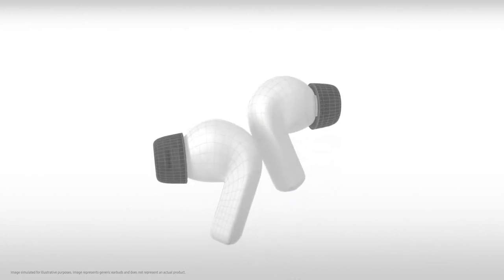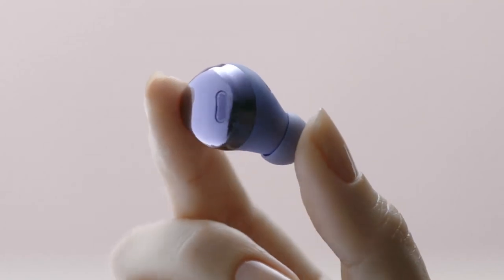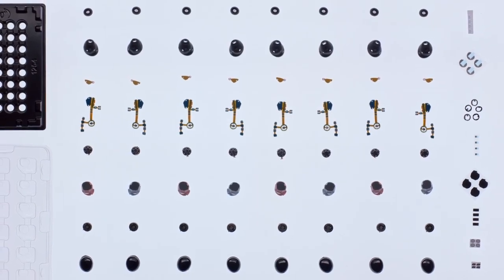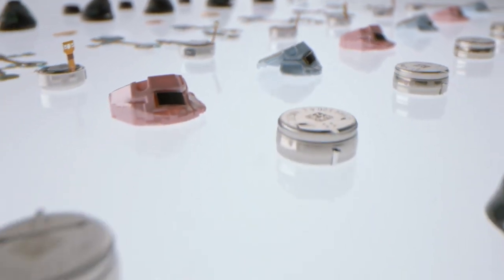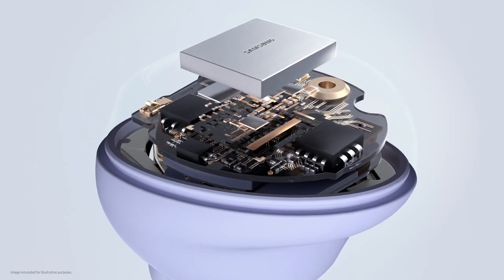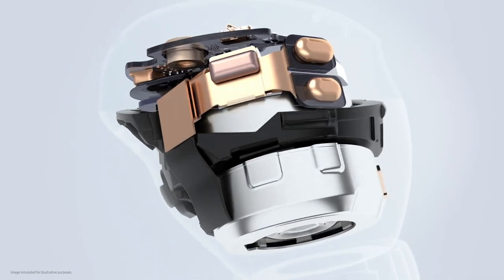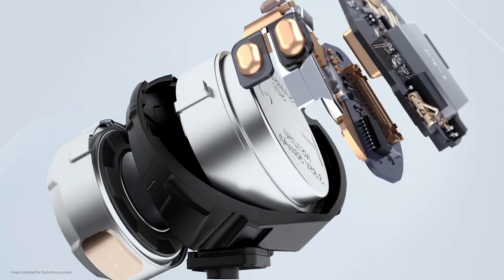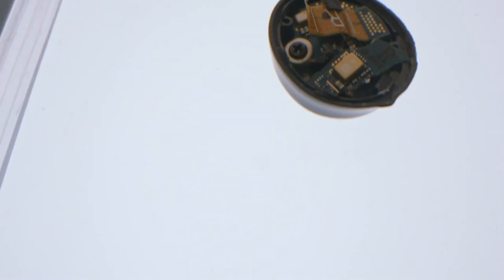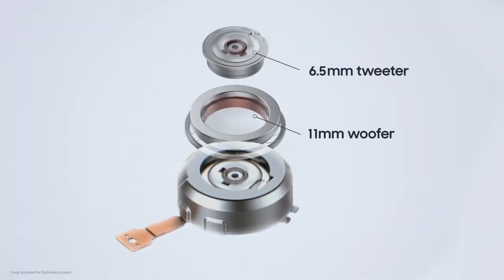But most wireless earbuds only use a one-way speaker system. The reason? Size. Building two-way speakers into a small earbud body requires an innovative solution. So engineers tried a new approach: System in Package. SIP minimizes the size of each chip and organizes them into dense stacks to integrate all parts into a single component for more optimal use of space. This breakthrough in engineering enables the Galaxy Buds Pro to feature two-way speakers.